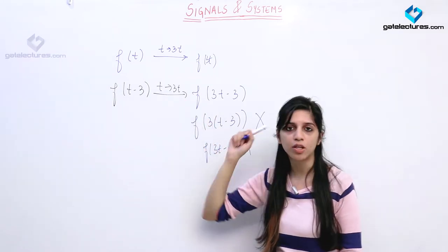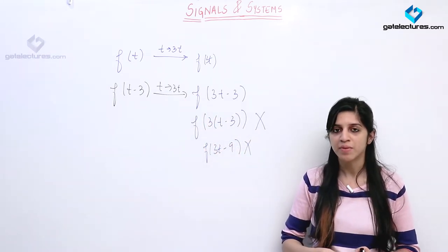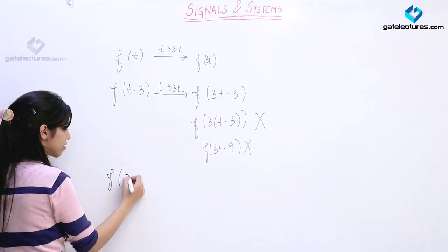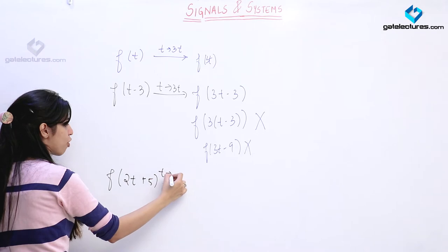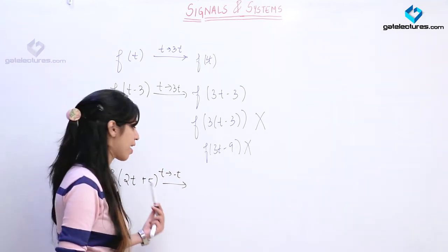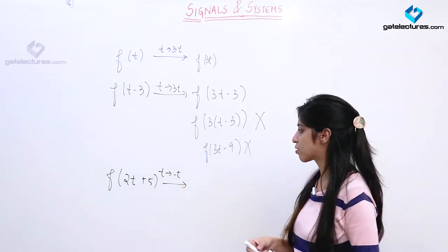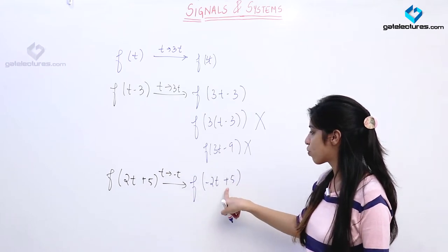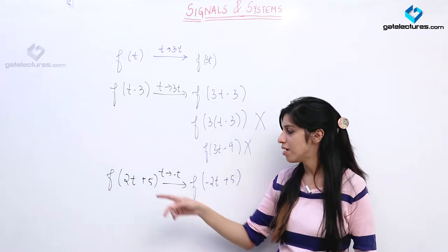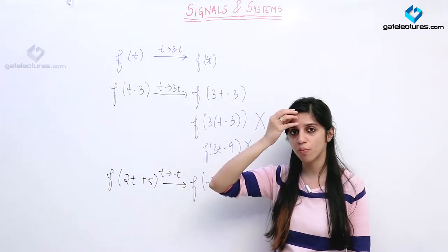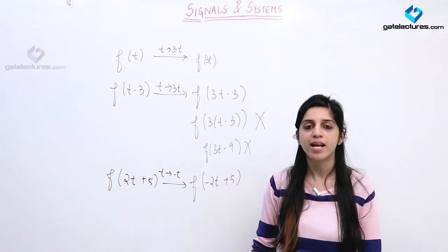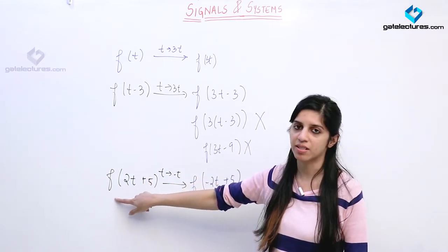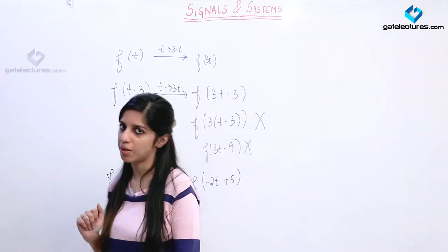Similarly, if you are performing time reversal, suppose I had a signal and I performed time reversal — time reversal means I replace t with minus t, the function is going to flip around the y-axis. So this is going to become f(-2t + 5); it is going to remain plus 5 only, it is only going to be a left shift. Because all the operations you are performing apply only to the independent variable, not to the complete argument.